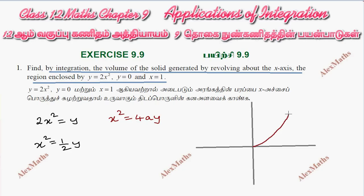The region is bounded by the vertex at the origin, y equals 0 (the x-axis), and x equals 1 (a vertical line). These form the boundaries of the region to be revolved.